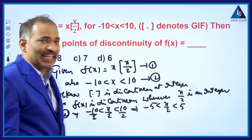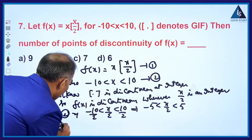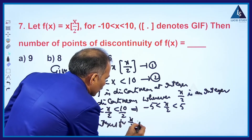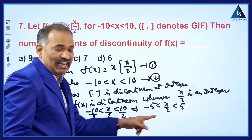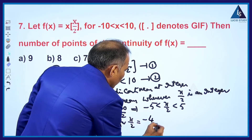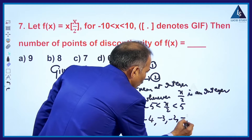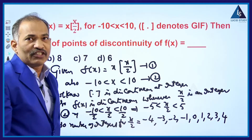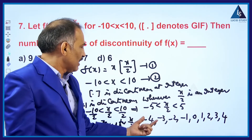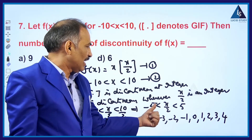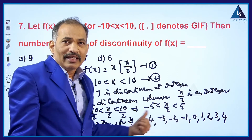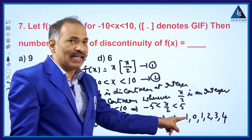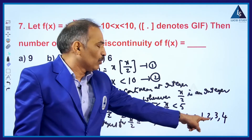Now calculating the number of integers for x/2 in the range -5 < x/2 < 5. The integer values x/2 can take are: -4, -3, -2, -1, 0, 1, 2, 3, 4. Note we do not include 5, since x/2 is strictly less than 5.